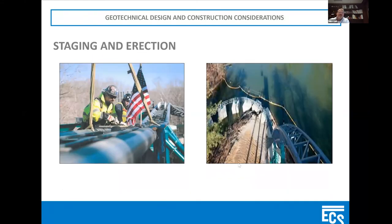This ride was actually featured by National Geographic, who did a story on this particular coaster and how it comes together. The picture on the left was from the National Geographic show — it shows workers on the Verbolten putting sections of rail together.